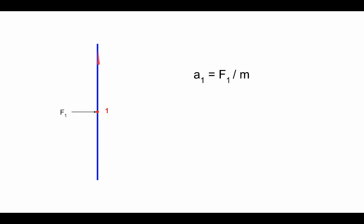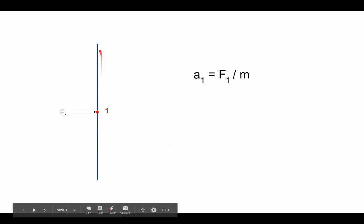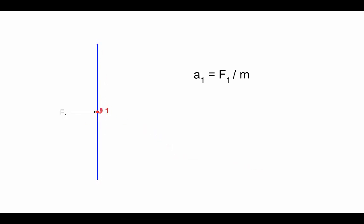What I've drawn here is a simple rod, and this is the center of mass. We apply a force f1 to the right at position one, and the acceleration of this point is simply the force over the mass. That's fairly straightforward because we're applying this to the center of mass, and we can understand how the center of mass will move.